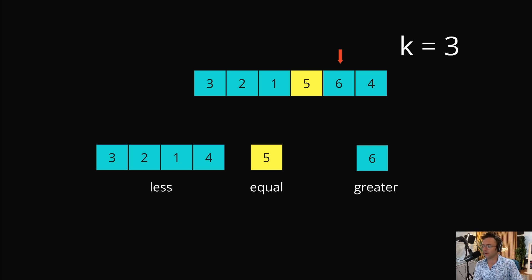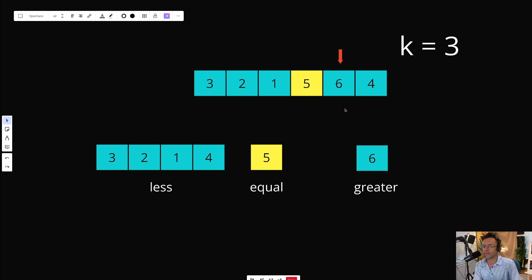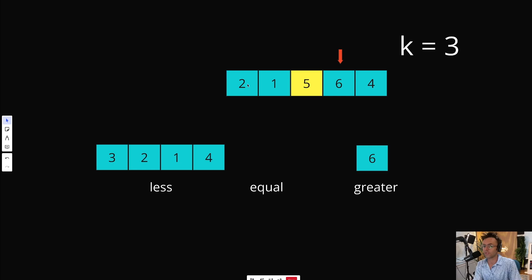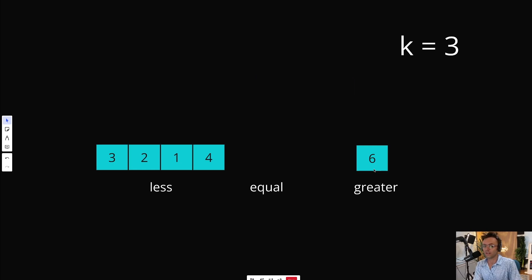All we need to do is partition again — one of the three arrays we created. In our greater list, we don't have enough elements to determine the position of K. Our pivot index (the equal array) isn't equal to the number we're searching for. So the only logical solution is that our number could be in the less-than array, and we're going to partition it again via recursion.